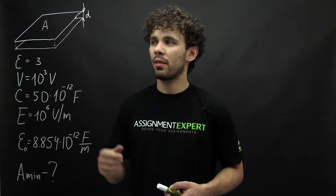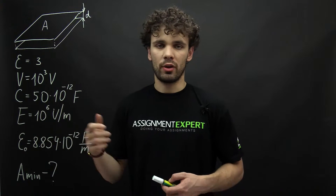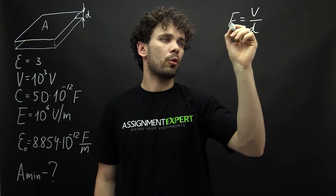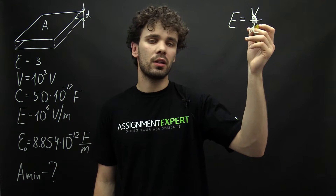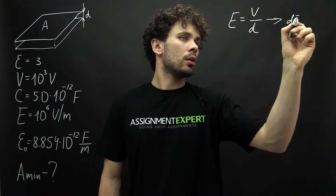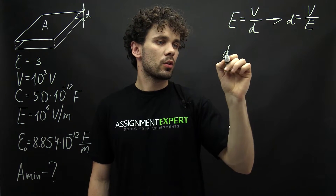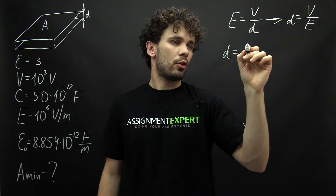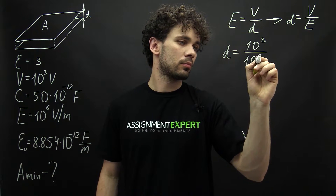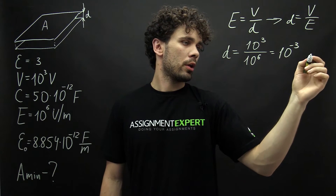Well, first of all, let's find the distance between the plates of such a capacitor. We will find it from the definition of electric field strength: E equals V over D, where E is the electric field strength, V is the voltage, and D is the distance between the plates. From here, D equals V over E. And so, D equals 10 raised to the third over 10 raised to the sixth, which gives us 10 raised to the negative third meters.